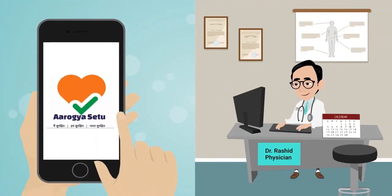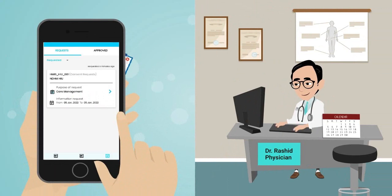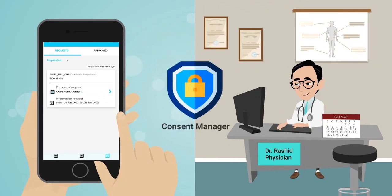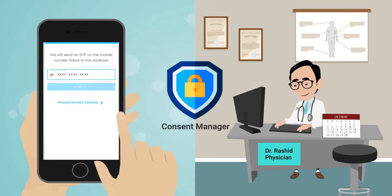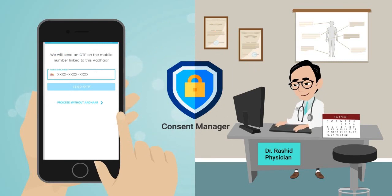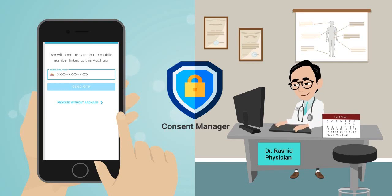When Rahul uses Arogya Setu to share his health record with a healthcare facility, the Consent Manager will send him an OTP for validation, fetch records from the Health Information Provider (HIP), and show them to the Health Information User (HIU). This ensures that the health record is shared securely.